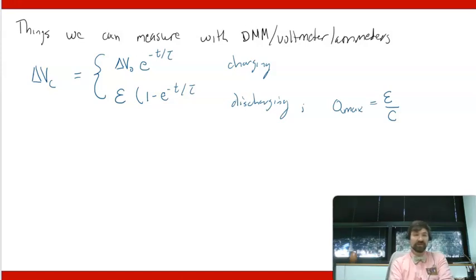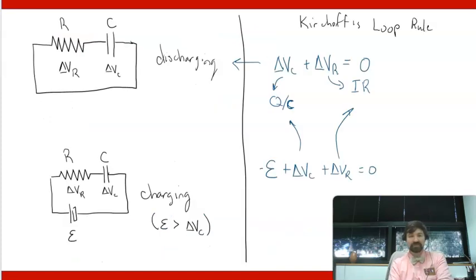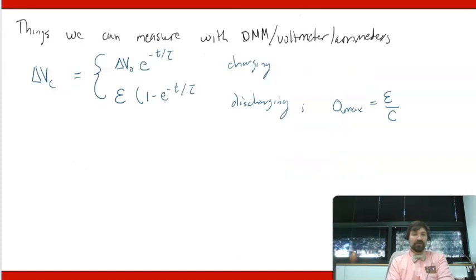Okay so a substitution has been made there. How did I get this equation? I basically just used these two equations and made use of this equation here, delta V_C is q over C. Another thing I could measure is the voltage drop across the resistor. So delta V sub R should look like either negative V sub C or epsilon minus V sub C or really negative epsilon minus V sub C.